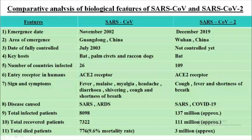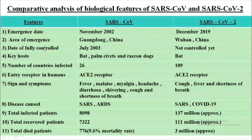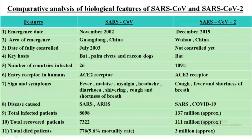Here is the comparative analysis of biological features of SARS-CoV and SARS-CoV-2. The emergence date of SARS-CoV is November 2002, and for SARS-CoV-2 it is December 2019. Area of emergence: SARS-CoV emerged in Guangdong, China; SARS-CoV-2 emerged in Wuhan, China. Date of full control: SARS-CoV was controlled by July 2003; SARS-CoV-2 is not yet controlled. Key host: SARS-CoV — bat, palm civets, and raccoon dogs; SARS-CoV-2 — bat. Number of countries infected: 26 for SARS-CoV and approximately 109 for SARS-CoV-2. The entry receptor in humans for both is the ACE2 receptor.